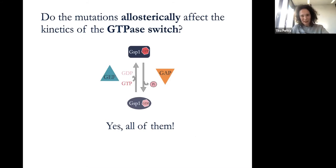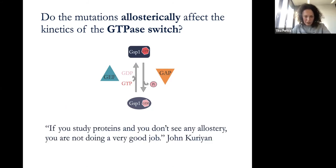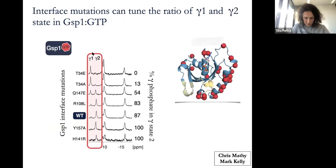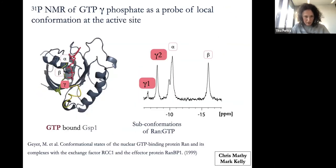Remembering my PhD training and the importance of allosteric proteins, I checked whether these surface mutations — far from the active site — actually allosterically affect the kinetics of the GTPase switch. To not show you a lot of biochemistry, the answer was yes. To paraphrase a great biochemist, John Kuriyan: if you're studying proteins and you don't see any allostery, you're not doing a very good job. To look at the details of the allostery, we used one-dimensional NMR.